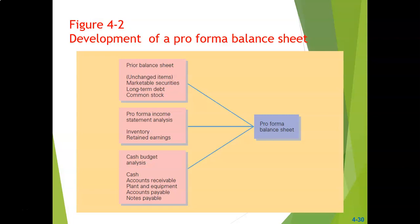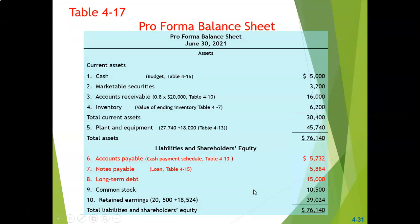From our pro forma income statement, we were able to determine the ending inventories as well as the increase in retained earnings. Thirdly, from our cash budget we were able to determine the cash balances, accounts receivable, plant and equipment, accounts payable, as well as notes payable. Here is the pro forma balance sheet we will create based on the previous balance sheet, the pro forma income statement, and the pro forma cash budget.